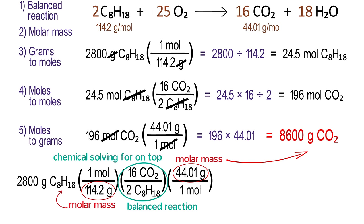In order to calculate this, we don't need a fancy calculator. First, type the number at the beginning, 2,800, and then divide by numbers on the bottom of fractions and multiply by numbers on the top of fractions. That is, 2,800 divided by 114.2 times 16 divided by 2 times 44.01. The answer, of course, is still 8,600 grams of carbon dioxide.